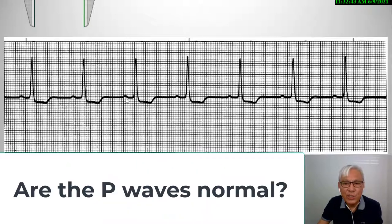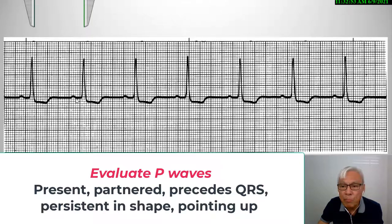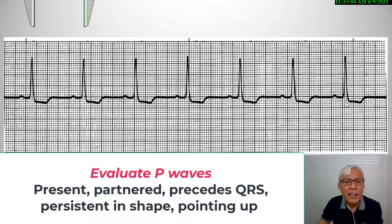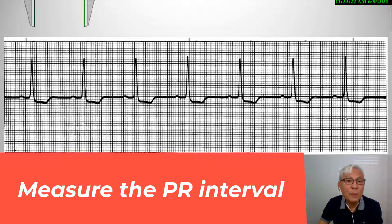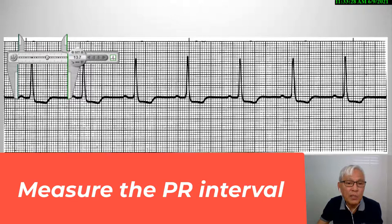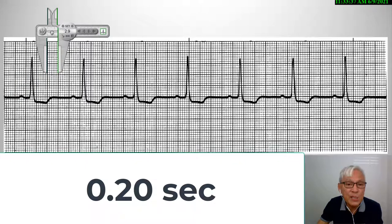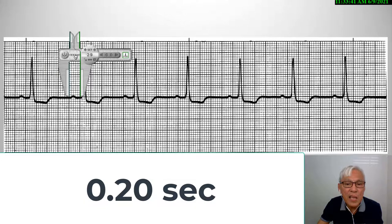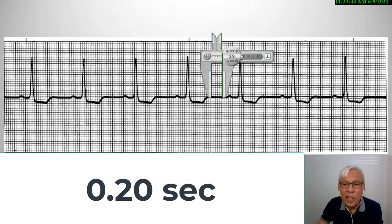The next step of analyzing an ECG is to determine the P waves. Looking at the strip, there are P waves. They're all present throughout. They precede a QRS complex, are partnered with a QRS complex, are persistent in shape, and are upright in this particular lead, which is lead two. The next step is to measure the PR interval, which looks like 0.20 seconds — around five boxes — and it is consistent throughout.